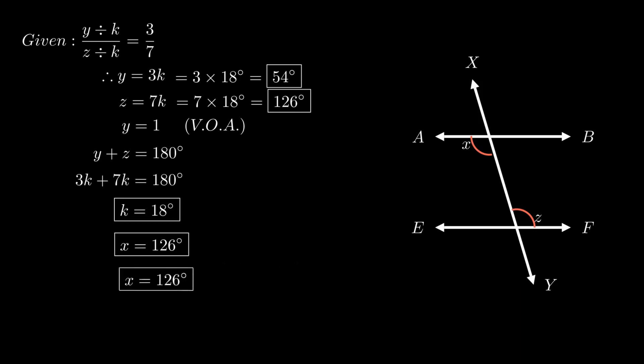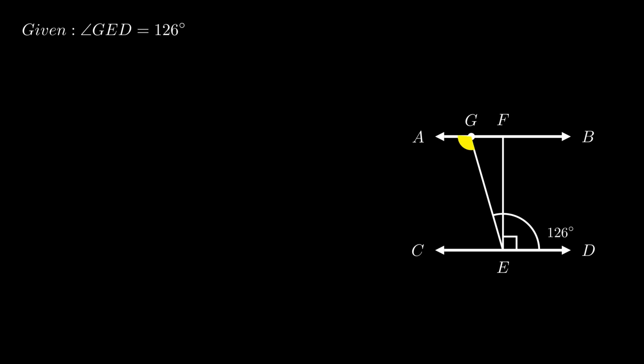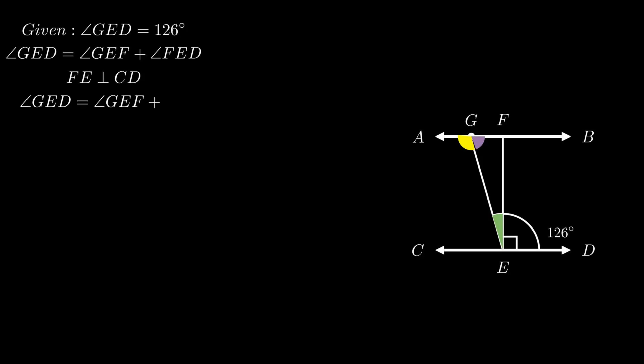Moving on to the third problem. The problem states that line AB is parallel to line CD, FE is perpendicular to CD, and there exists a point G on line AB such that angle GED equals 126 degrees. We need to find angle AGE, angle GEF, and angle FGE. From the figure, angle GED equals the sum of angle GEF and angle FED. Since FE is perpendicular to line CD, angle FED equals 90 degrees.